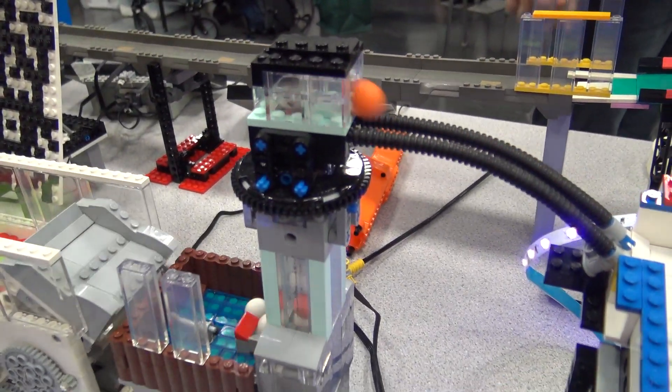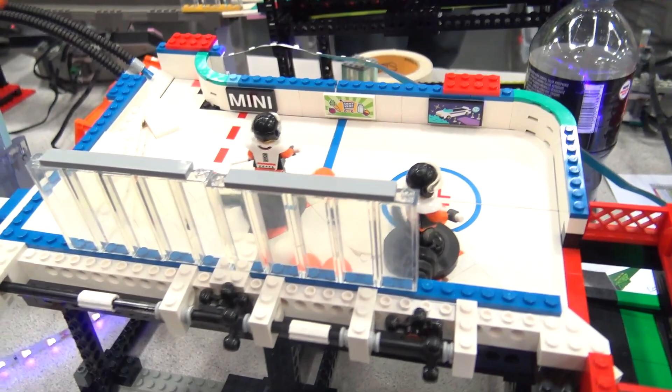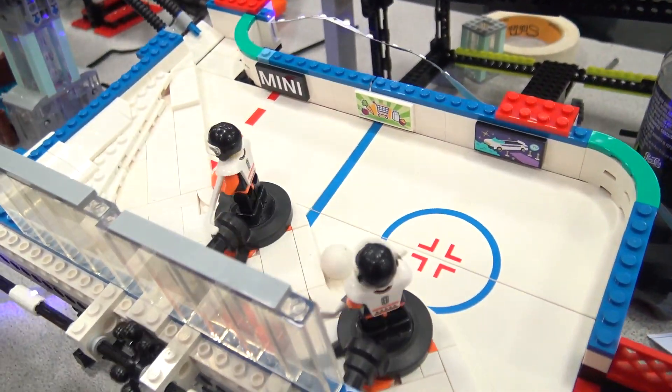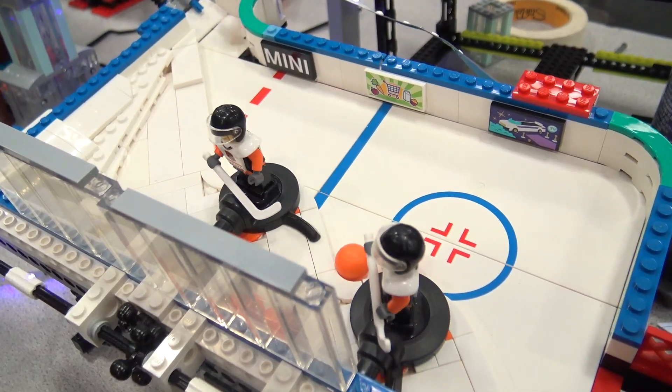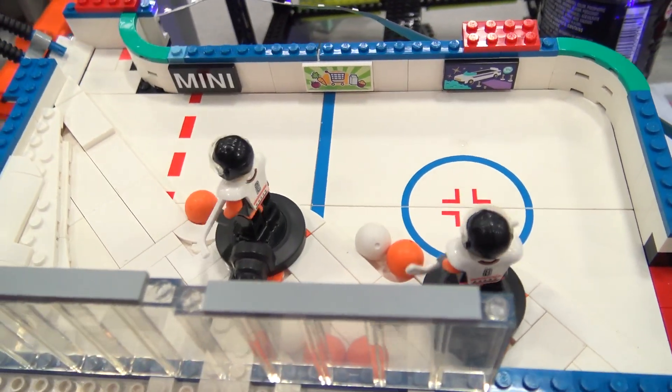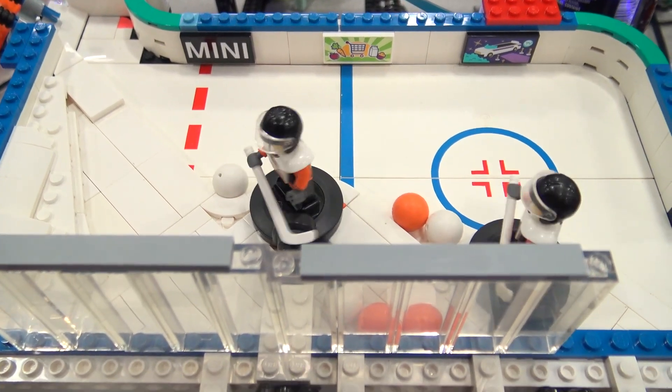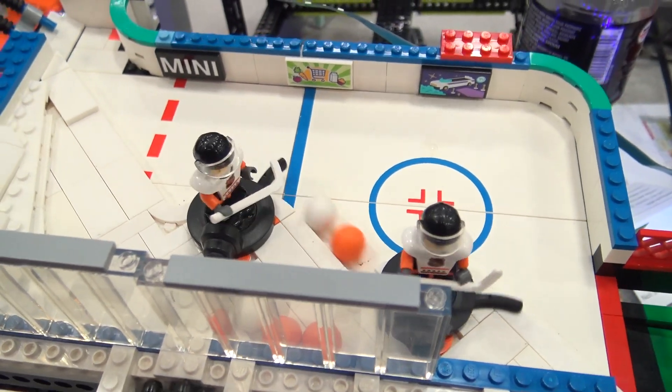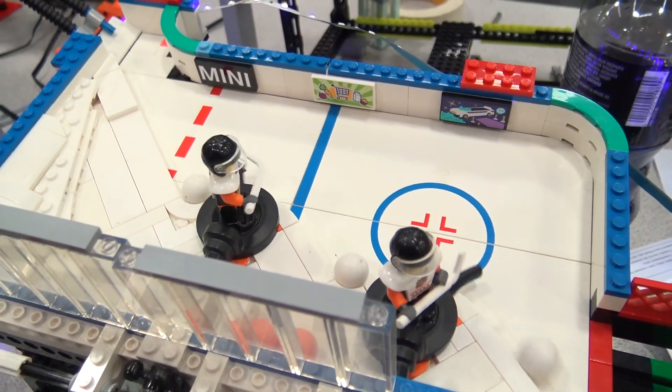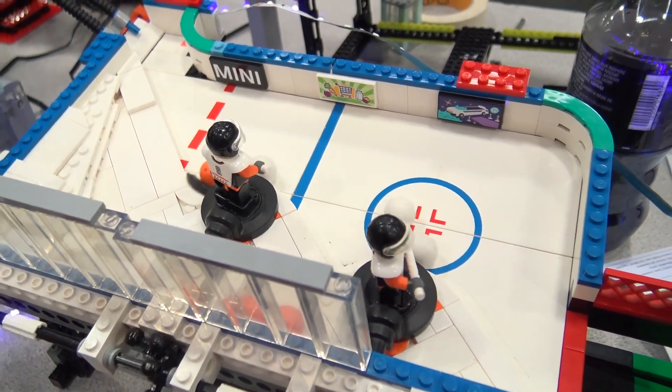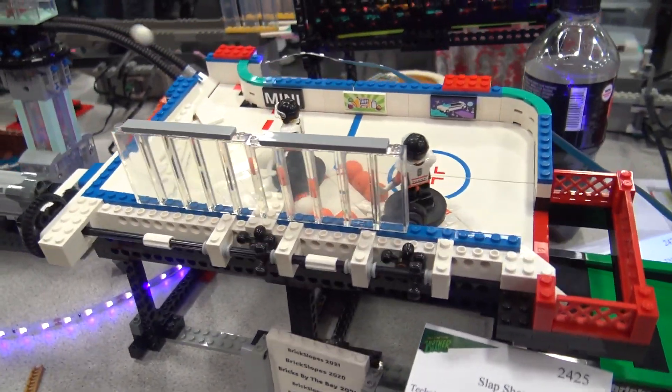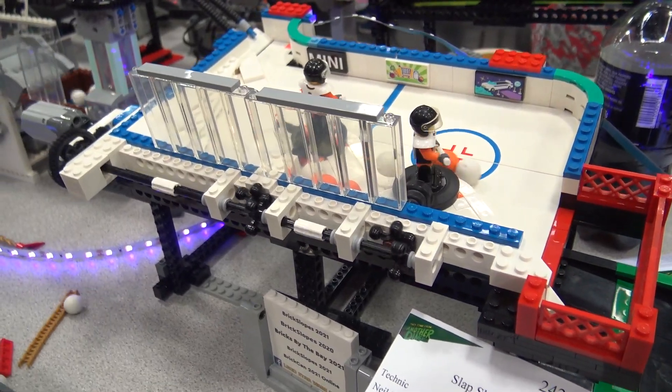That feeds out into my newest module and the weirdest parts usage here you'll find, which is the spinning hockey players. This is called Slapshot. The black spinning parts here are from the early 2000s Lego sports line that we use for the NHL hockey. The figures are the original NHL hockey players. You can see the tile underneath from that set.